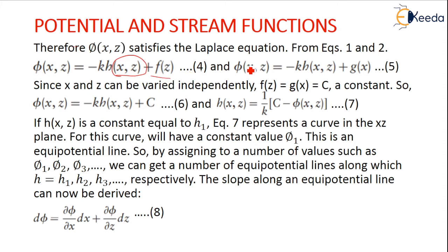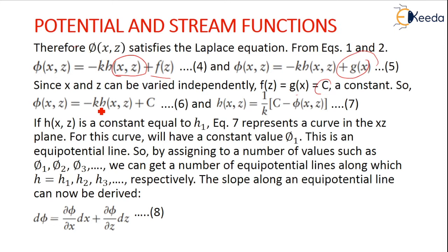Similarly, phi of x comma z is equal to minus k into h of x comma z plus a function g of x. This is taken as equation 5. Since x and z can be varied independently, we consider a function of z and a function g equal to some constant c. So phi of x comma z is equal to minus k times h of x comma z plus a constant.